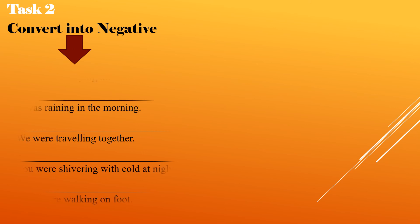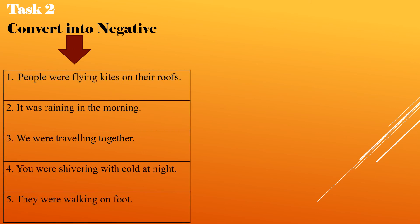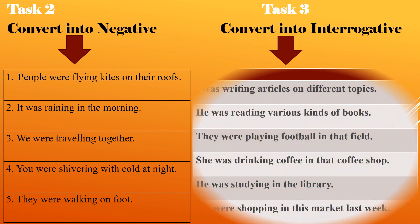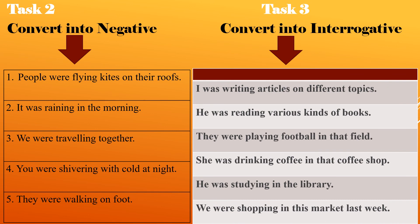Moving ahead, you have task two. Here you are supposed to convert the given sentences into negative sentence. Here is a set of sentences which you are supposed to convert into negative. Similarly, task three requires you to convert the given set of sentences into interrogative sentences. Likewise, you will also be provided both these set of sentences in the form of worksheets separately at the end of this lesson. You are supposed to do as required.